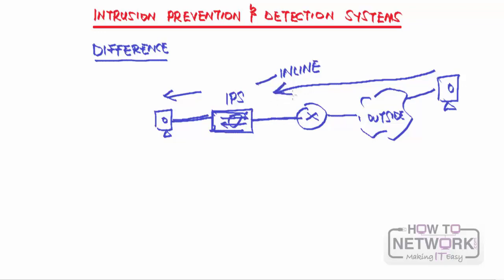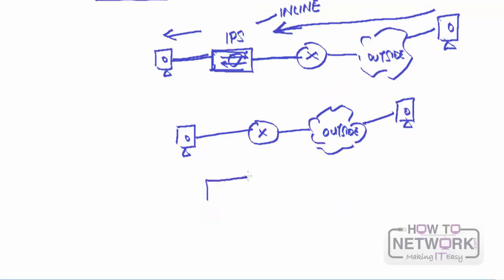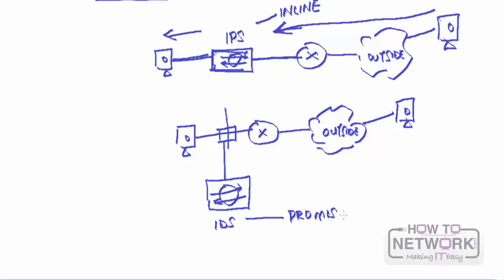Because the IPS is placed inline, it has more options — it can deny a connection or reset the connection. The IDS, by contrast, is placed out of line in promiscuous mode. A switch mirrors the packets from the traffic and sends them to the IDS.